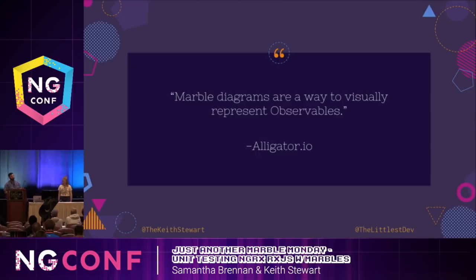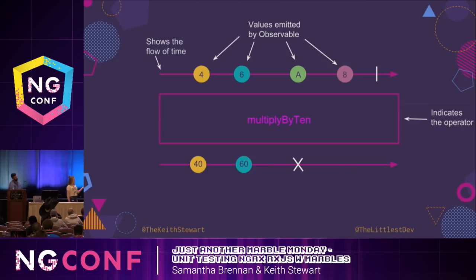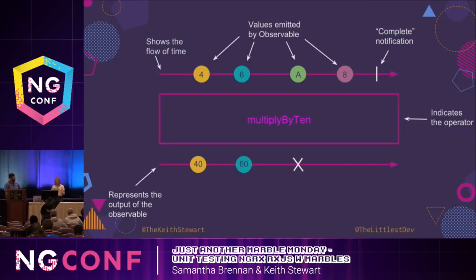Alligator.io says that marble diagrams are a way of visually representing observables. Here is a marble diagram. The lines show the flow of time as indicated by the arrows on the right side. Next we see the marbles, which are values emitted by the observable. Then we see the operator — in our case it's multiplying everything by 10. Then we see the bar at the end of the sequence, which represents completion. The output contains the values that subscribers to the observable will receive. And the X represents an error if one is present in your code.